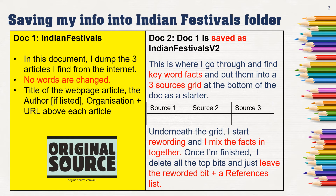So I'm happy with that. Now I make sure that I go and delete all the top bits — the grid and all the bits above the grid — so that all I've got left in Indian festivals version two is actually my rewording and a references list. I print that out, then I look at my new document and compare it to the original wording to make sure that I have made enough changes.